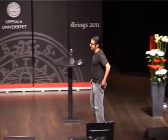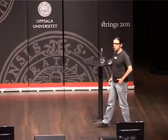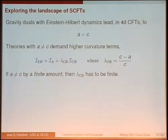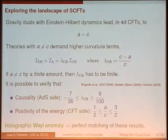Our next speaker is Jose Edelstein from the University of Santiago de Compostela. To analyze holographically superconformal field theories with non-equal central charges a ≠ c, one must turn on higher curvature corrections on the gravity side — for instance, the Gauss-Bonnet correction in five dimensions. The coefficient of the Gauss-Bonnet term is proportional to c minus a. It has been shown this theory has causality problems except when the parameter lies in a specific range. On the CFT side, a/c in any N=1 superconformal field theory must lie in a corresponding range, and holographic a-anomaly matching gives a perfect match between these two windows.